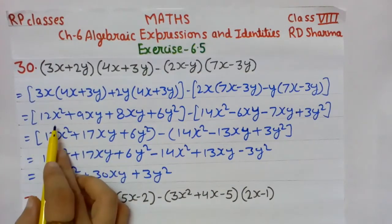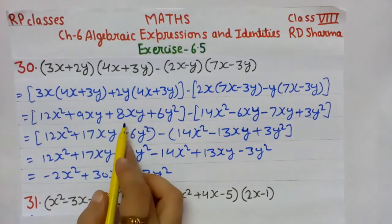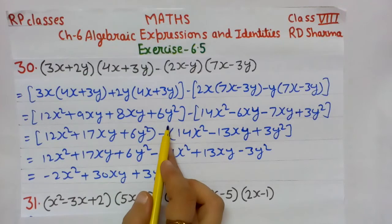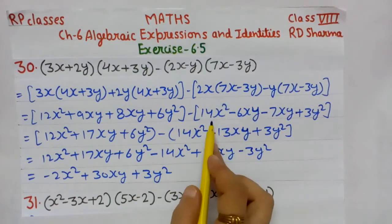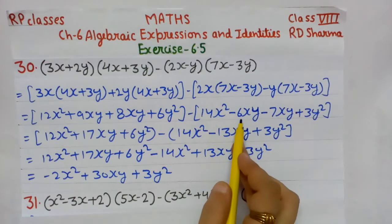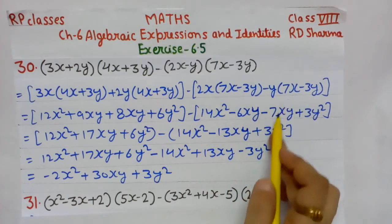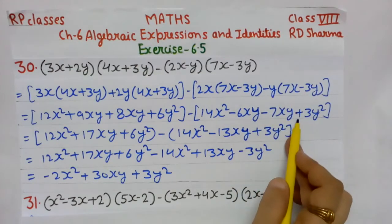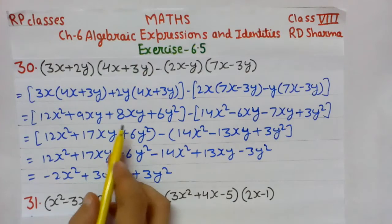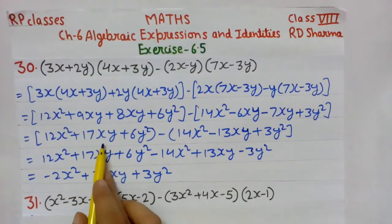3×4 = 12, so 12x². 3×3 = 9, so 9xy. 4×2 = 8, so 8xy. 3×2 = 6, 6y². Here: 7×2 = 14x², 3×2 = 6 becomes minus 6xy. Multiplying by minus y: minus 7xy, minus × minus = plus 3y². Now like terms: 9xy + 8xy = 17xy. Here also like terms: minus 6xy − 7xy — minus minus add together in similar sign — so minus 13xy.